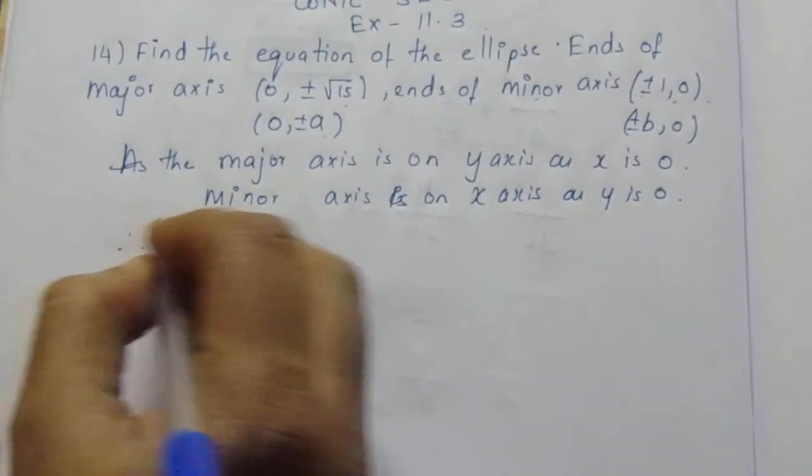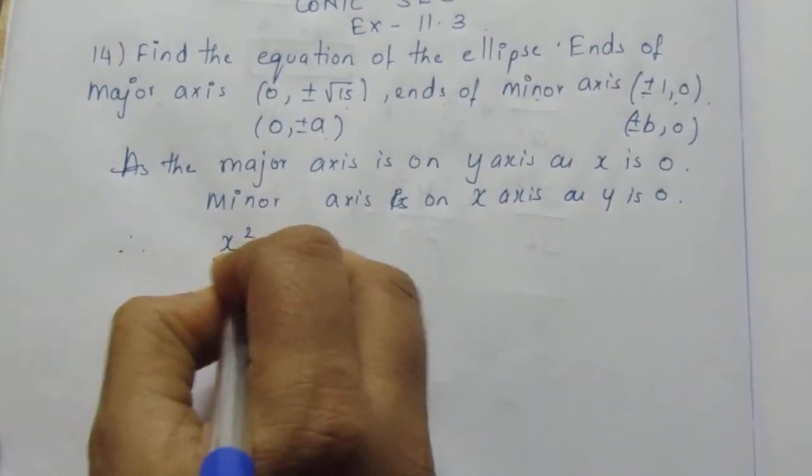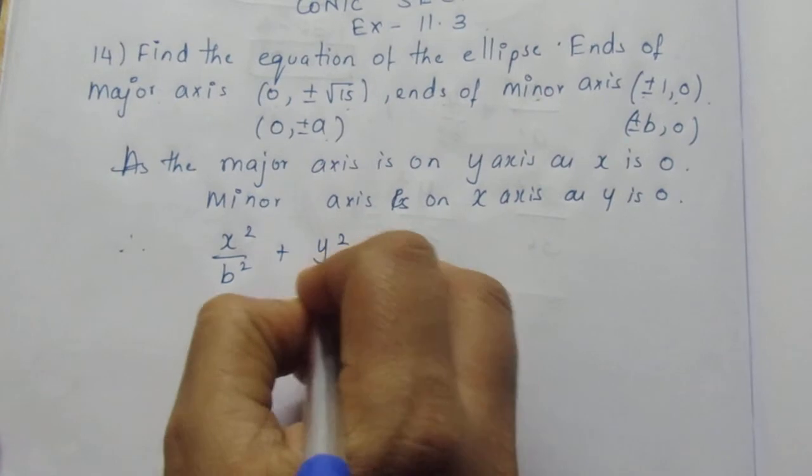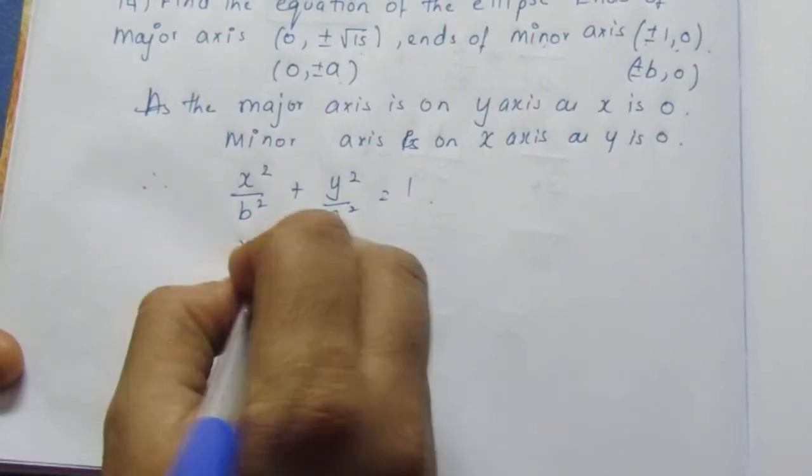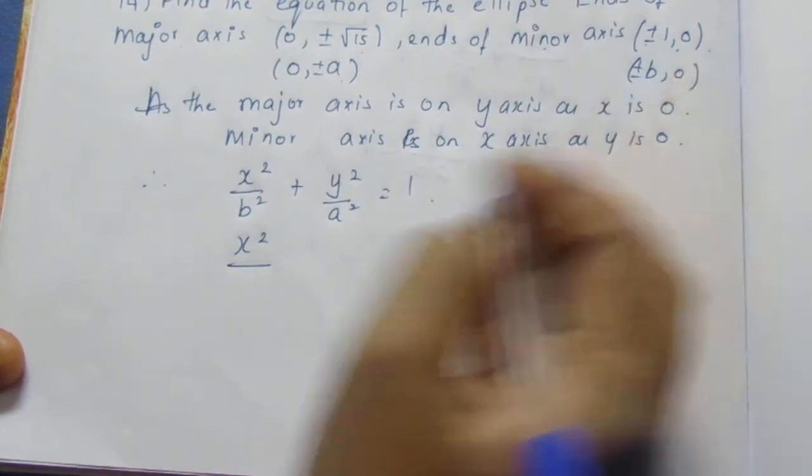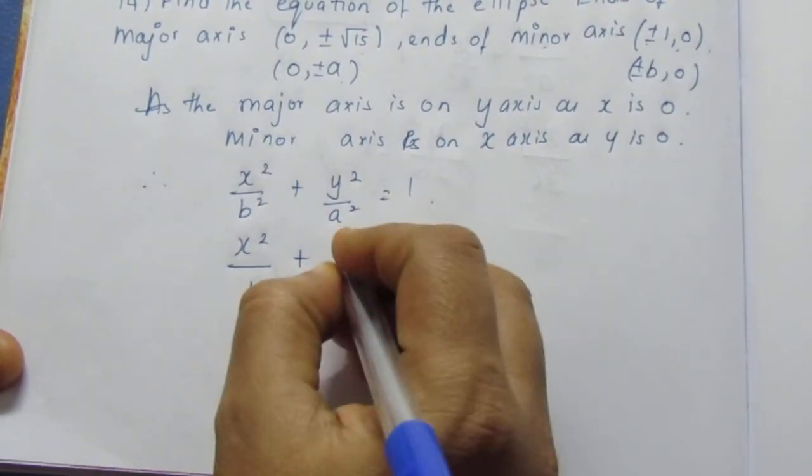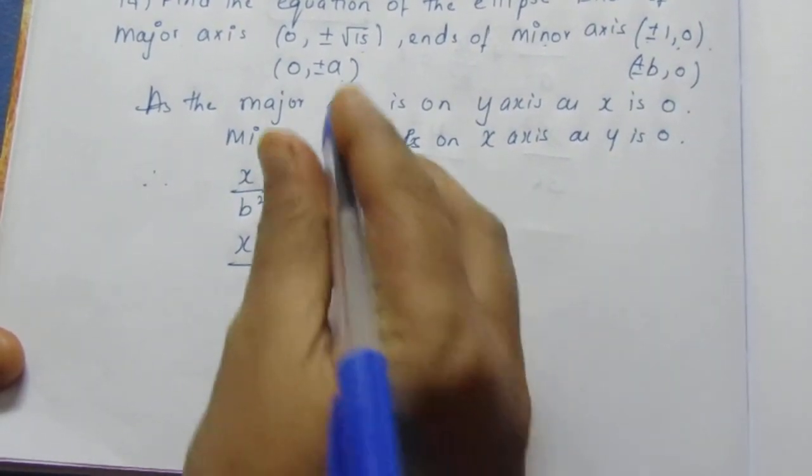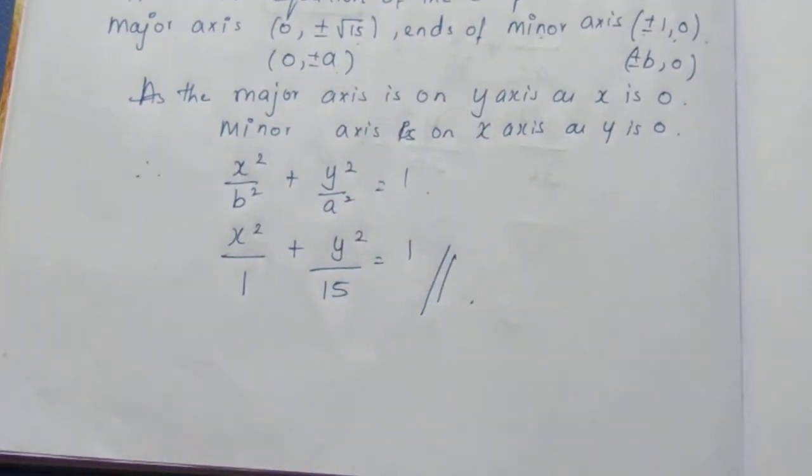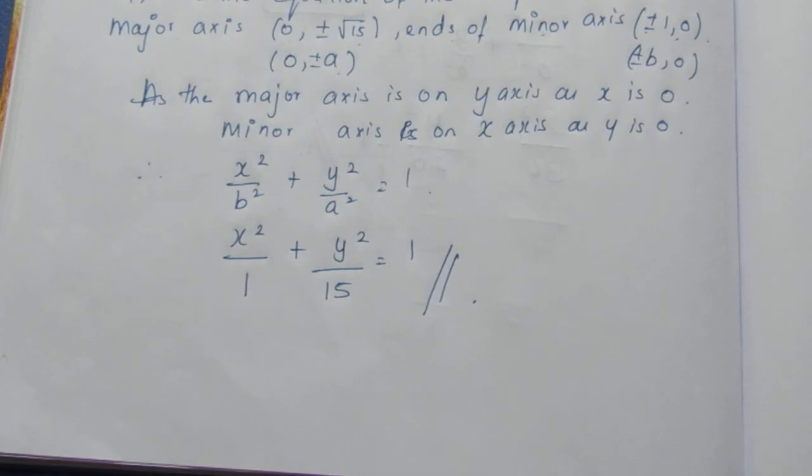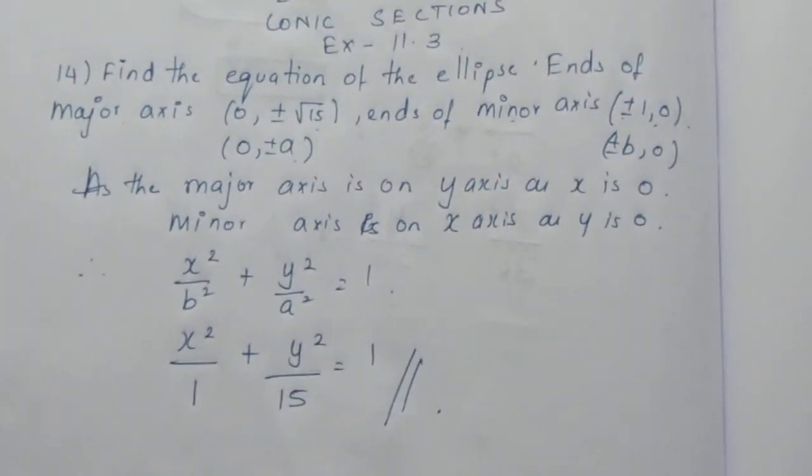Therefore, the equation will be x²/b² + y²/a² = 1. Here, since b = 1 and a = √15, we get x²/1 + y²/15 = 1, which is the required equation for the ellipse for question number 14.